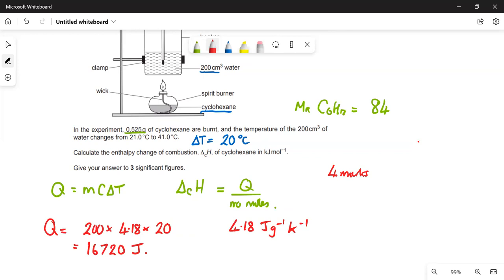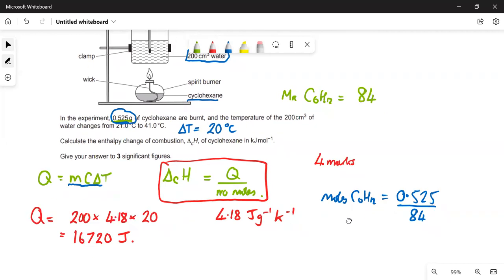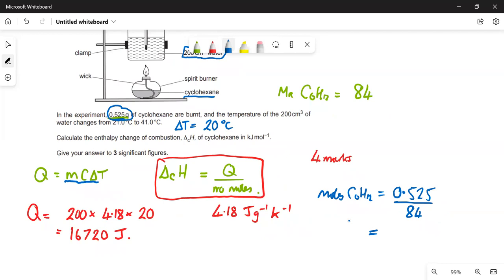Now we need to work out our moles of cyclohexane. Moles of cyclohexane is equal to the mass of cyclohexane, 0.525 grams, divided by the MR which is 84. A big mistake here is that people think that's the mass of cyclohexane and they think that is the mass that goes in that equation. That is not the mass, that's the mass of the water, because you're heating up all the water. The water is 200 centimeters cubed, so that's 200 grams. That is a pretty common mistake people make. The mass in that is the mass of water heated up, not the mass of stuff you've burnt. Moles of cyclohexane, we work that out, that is equal to 6.25 times 10 to the minus three.